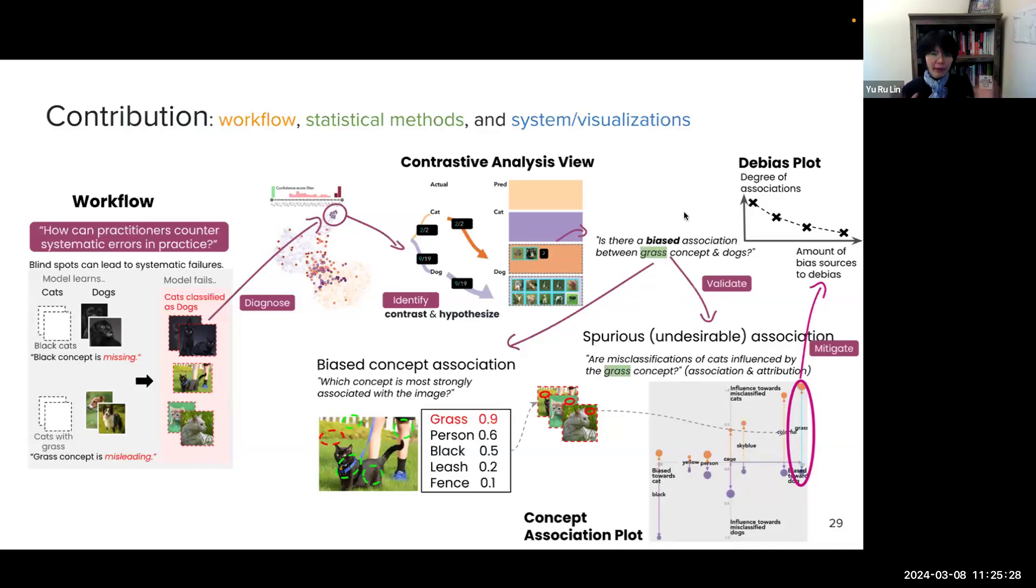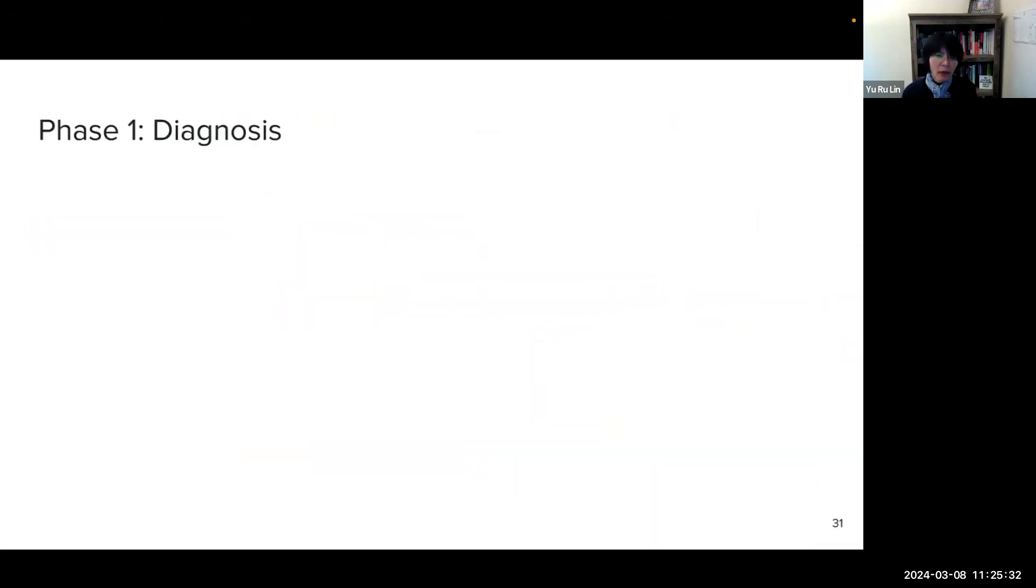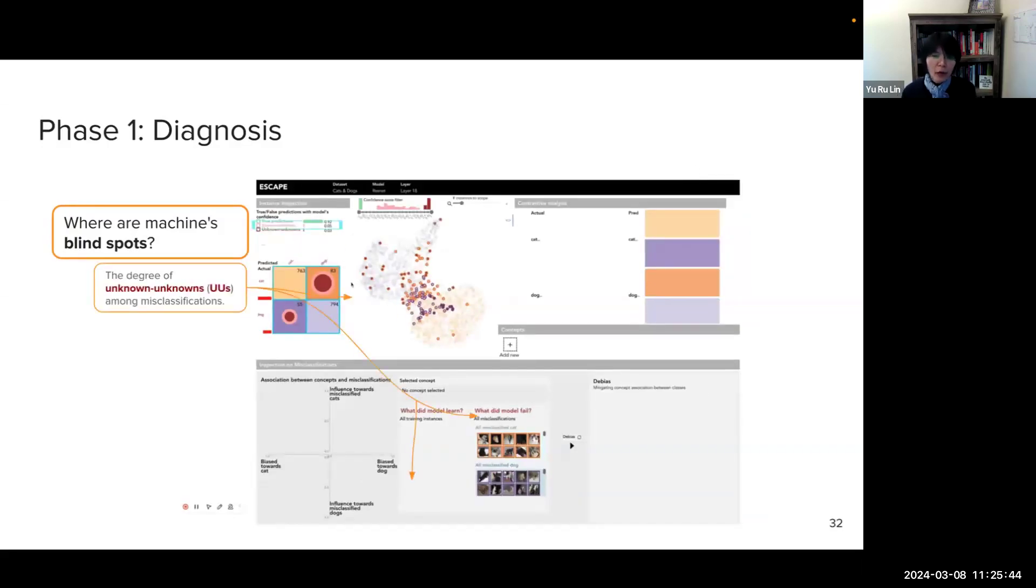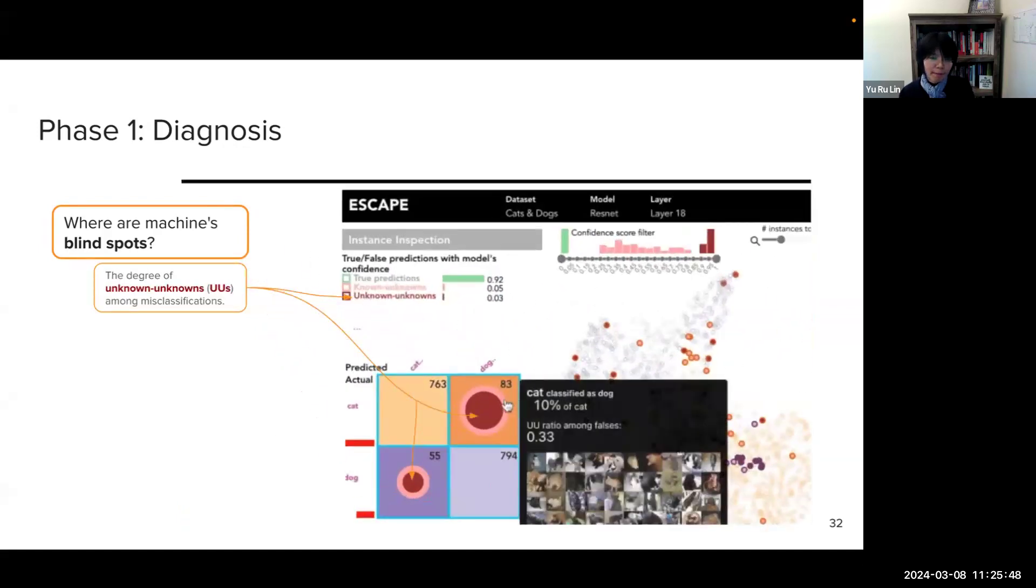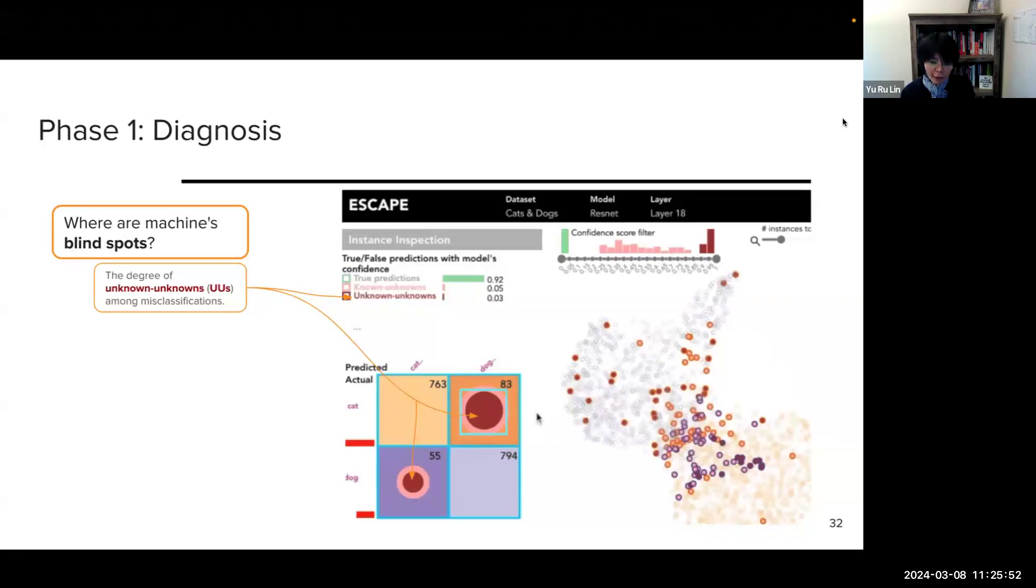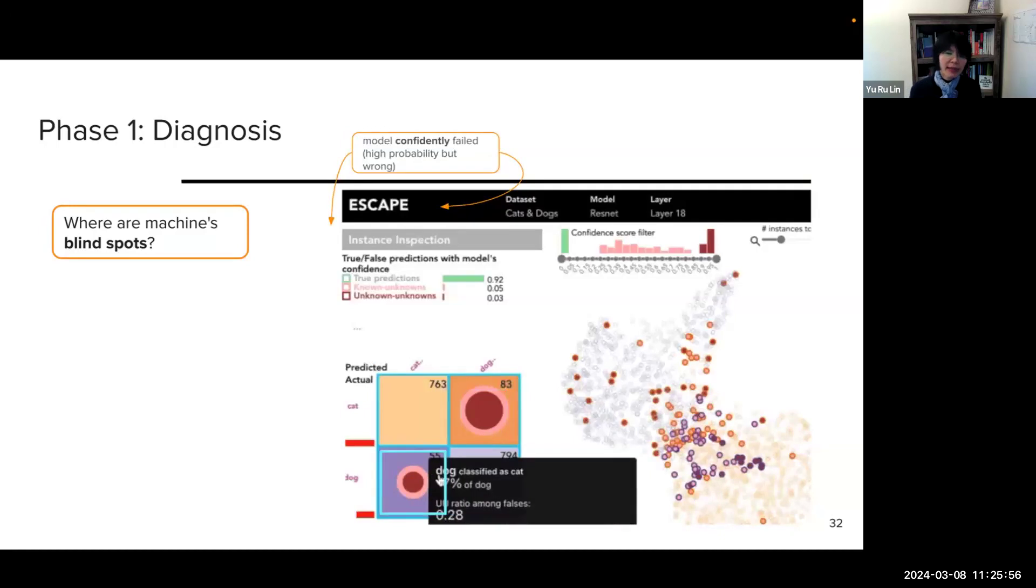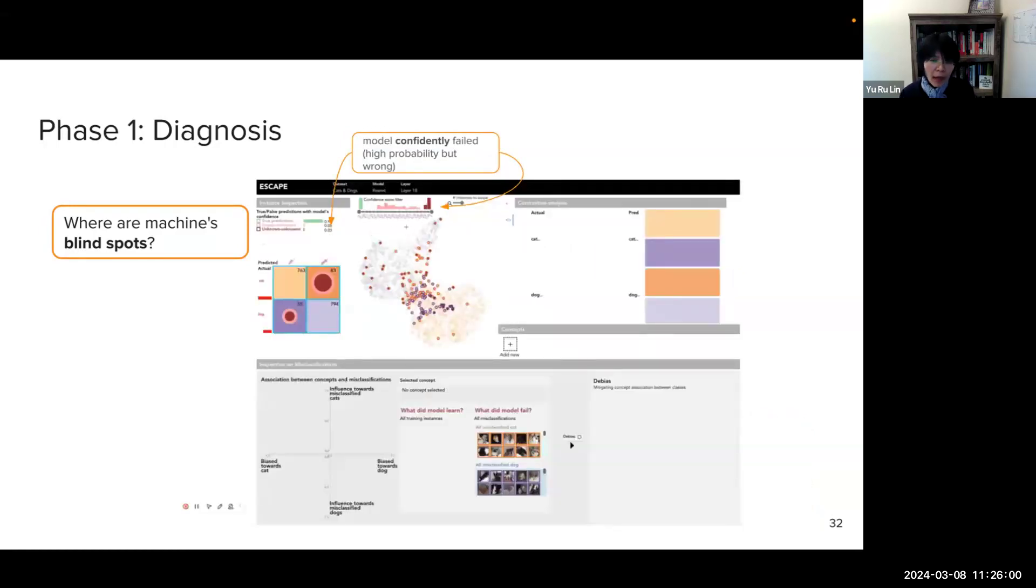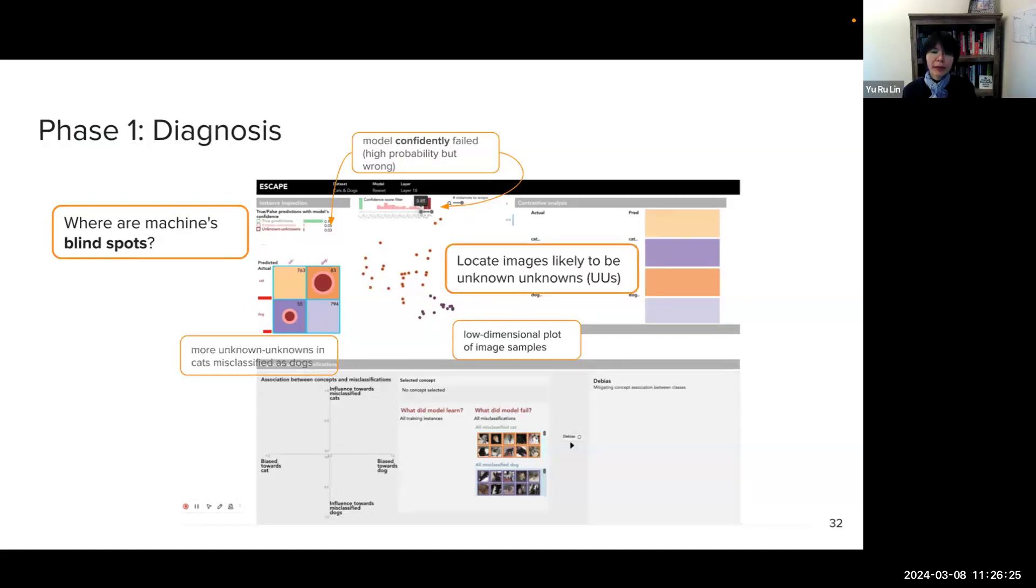So let me walk you through with a brief demo. So the diagnosis phase helps answer the question, what are the machine's blind spots? So the system shows the degree of unknown unknowns among misclassifications. And these are the instances where the model fails with high confidence. They are predicted with high probability, but wrong. And the degree of unknown unknowns are linked to the confusion matrix, where users can see, in this case, there are more unknown unknowns in the cats misclassified as dogs. And in the lower dimensional plot of these samples, users can locate images likely to be unknown unknowns.